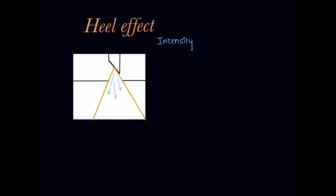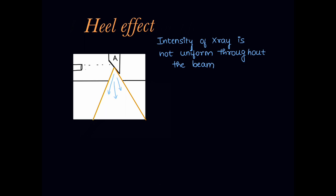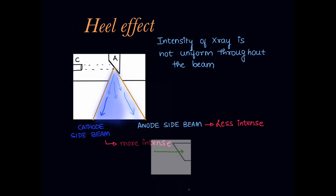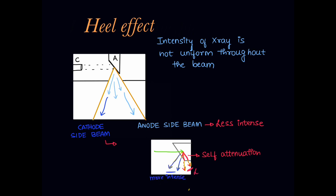The second principle is called the heel effect. It means the intensity of the primary x-ray beam produced is not uniform throughout the beam — the intensity varies. Here is the cathode and anode, and once the primary beam is produced, there are two sides for the beam. The anode side of the beam is less intense, and the cathode side of the beam will have more intense x-rays. More intense towards the cathode side and less intense towards the anode side. The reason for this is self-attenuation of the primary x-ray beam by the anode itself.